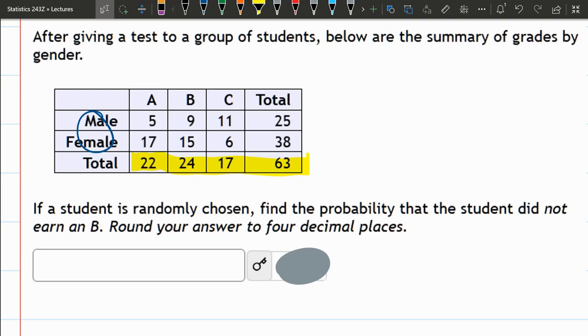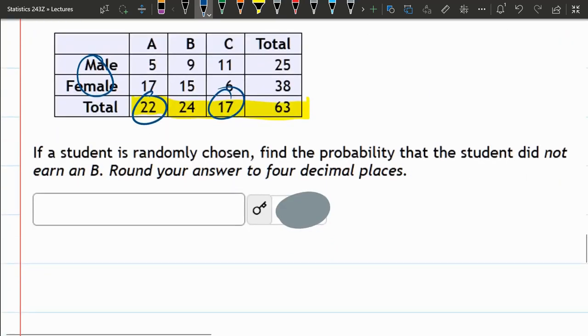Did not earn a B. So here's the students not earning Bs, 22 and 17. So these are the favorables. So 22 out of 63, 17 out of 63. And that is 39 out of 63.